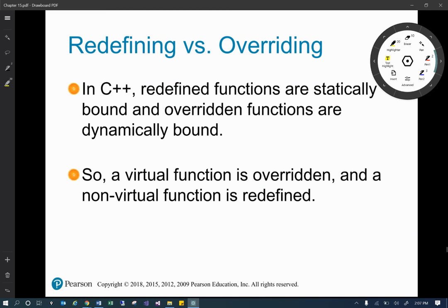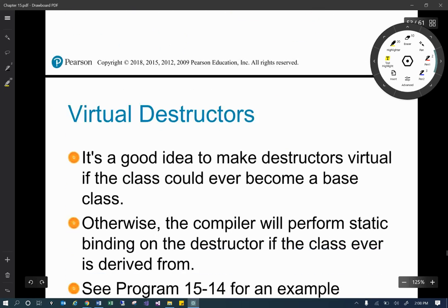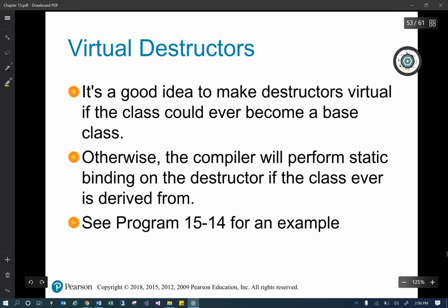C++ is all about the rules. Redefining versus overriding. In C++, your redefined functions are statically bounded, while the overridden functions are dynamically bound. So a virtual function is overridden and a non-virtual function is redefined. Please understand this might be on a test. It might be on a test. Virtual function is overridden, non-virtual is redefined. And because we are C++, we like to make sure that we complicate it as much as possible. It's a good idea to make the destructors virtual if the class could ever become a base class. Otherwise the compiler will perform static binding on the destructor if that class is ever derived from. So kind of look at your programs 15-4 for an example.